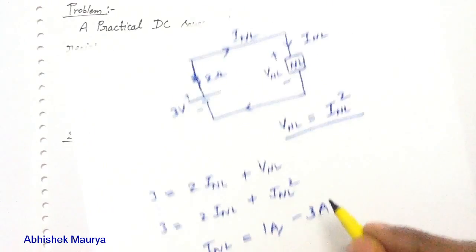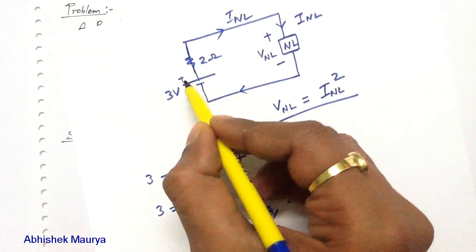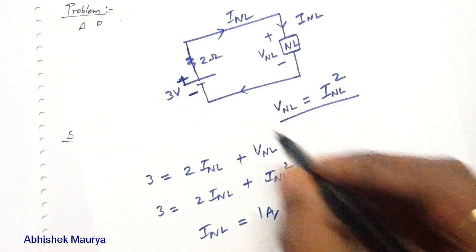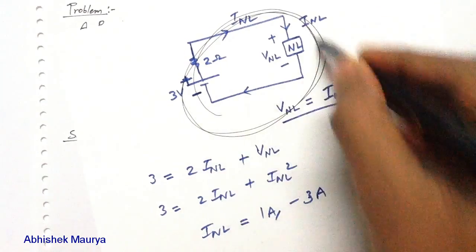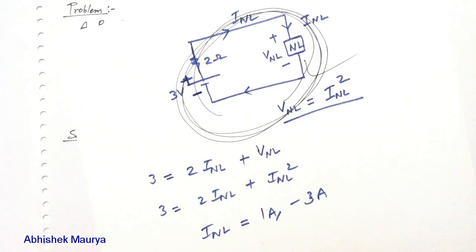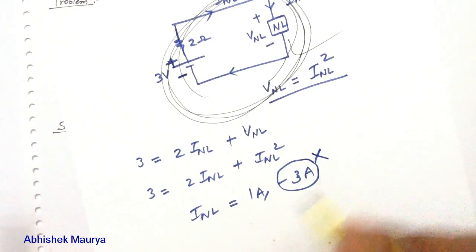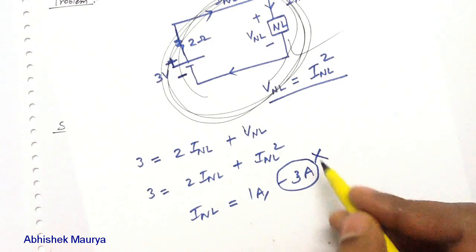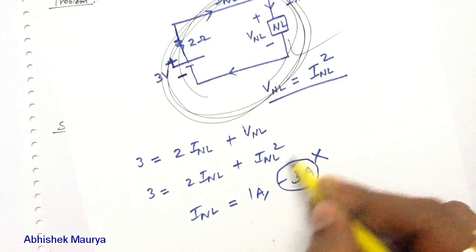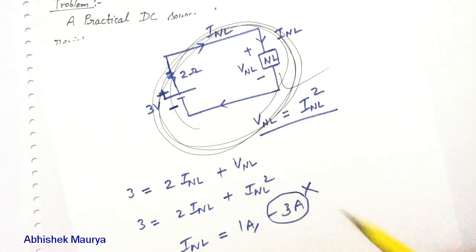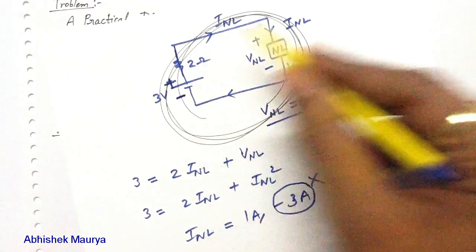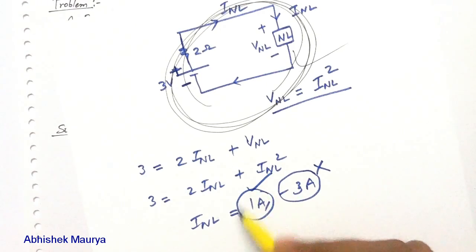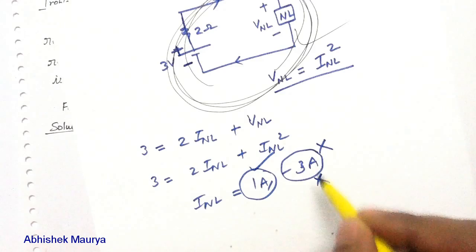Because the polarity of the battery is in this way, the current will always circulate in the clockwise direction. So the answer of minus 3 A is wrong — we will neglect it because the current cannot flow in the anti-clockwise direction. We will take 1 A and neglect the minus 3 A value.